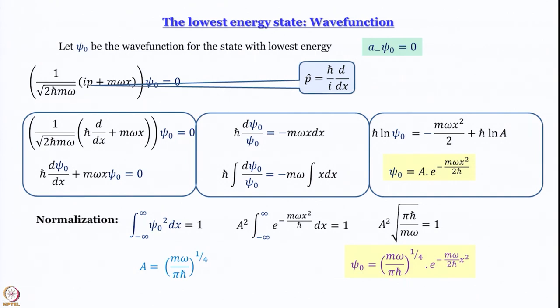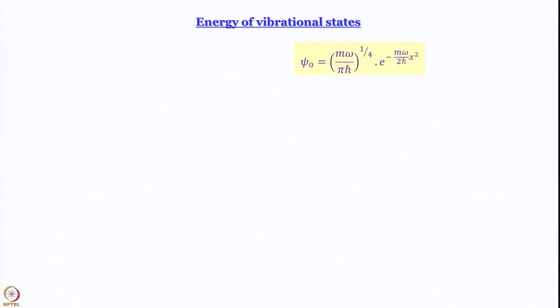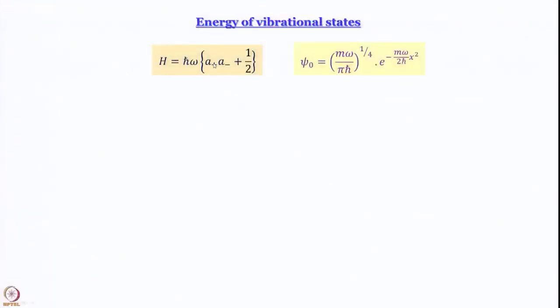The next step is to find the energy. Since we know the wave function, we make the Hamiltonian operate on it, and the energy comes as the eigenvalue. We use the ladder operator form of the Hamiltonian: H = ℏω(a₊a₋ + ½). So Hψ₀ = ℏω(a₊a₋ψ₀ + ½ψ₀) = Eψ₀.